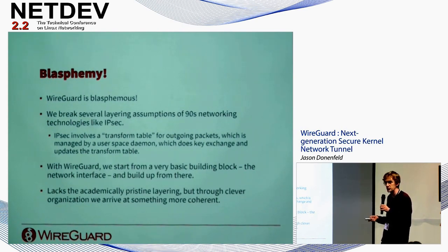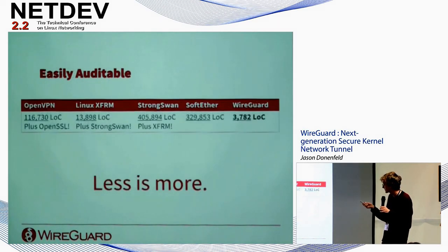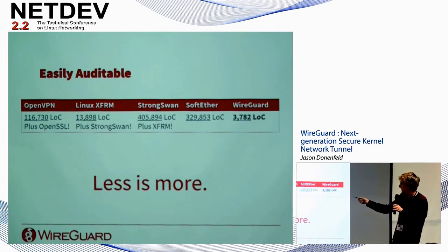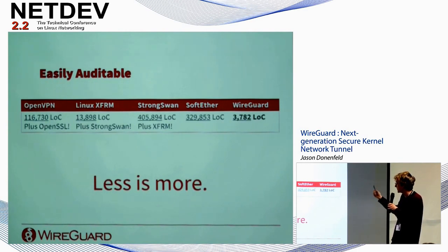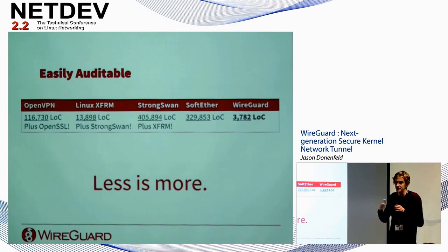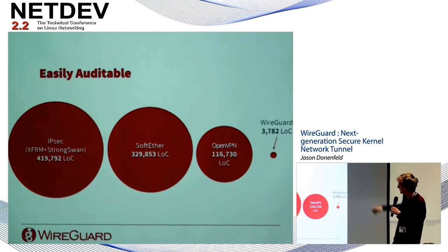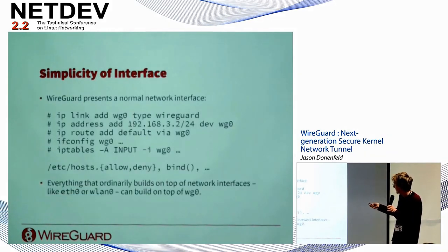Starting with a struct net_device as the basic building block, WireGuard is easily auditable. OpenVPN is 100,000 lines of code, XFRM is 13,000 lines plus strongSwan for key exchange which is massive, and SoftEther is big too. WireGuard is less than 4,000 lines — something you could sit down and read entirely in an afternoon.